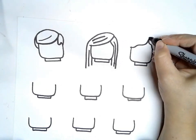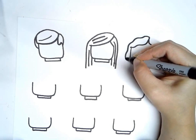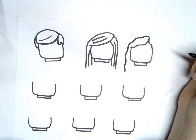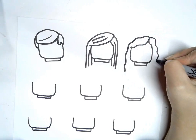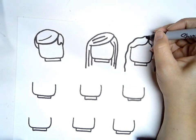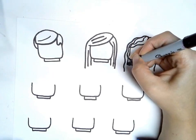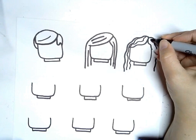And we'll make a line that comes up and goes around. And it's going to be a little wavy. All the way down. And then wavy down this side. And then we'll do like wavy lines inside to show that it's curly hair.